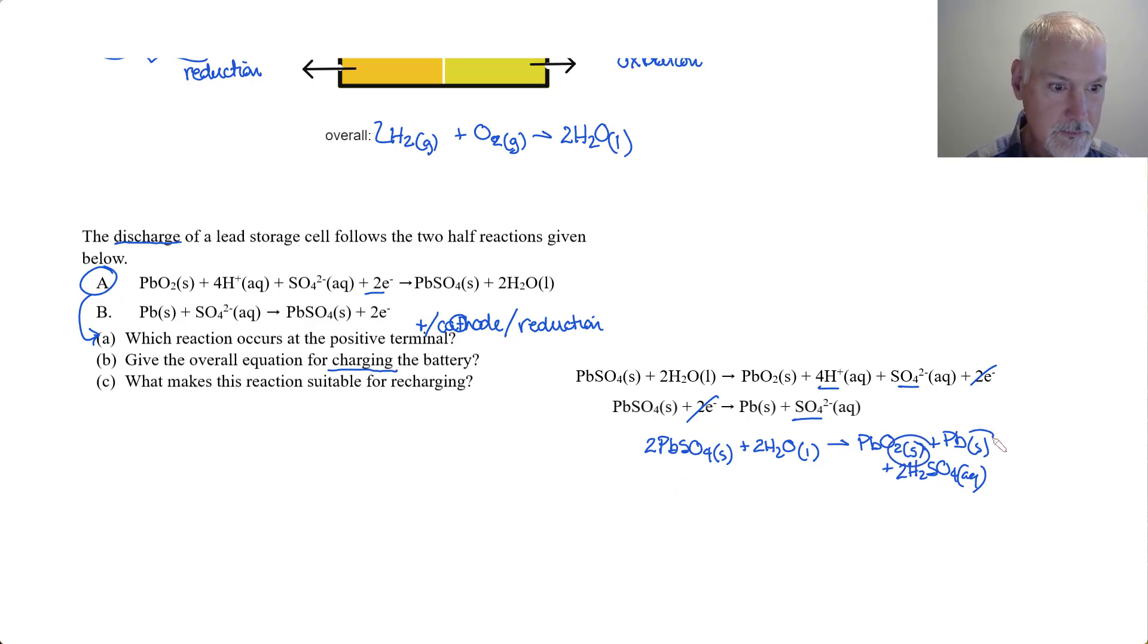And finally, what makes this a good reaction for recharging? Well, we've got those products that aren't going to disperse very easily. So the products don't disperse. So that's it for primary cells, secondary cells and fuel cells. Thanks for watching.